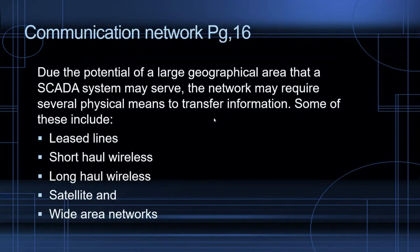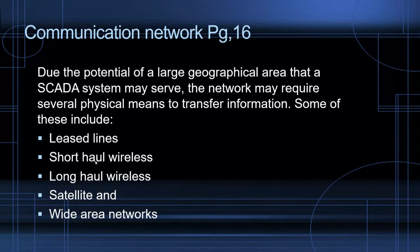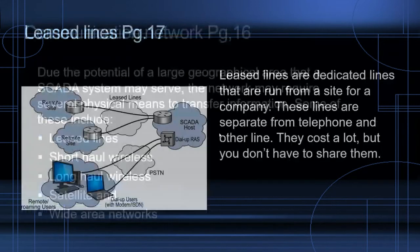The communications network section covers different types of communication used in a SCADA system. It's not just wireless, though wireless is very common — it depends on what infrastructure is available. We'll look at five different scenarios: leased lines, short-haul wireless, long-haul wireless, satellite, and wide area networks — all involving different mediums, wired or wireless, some with combinations.